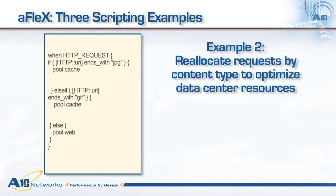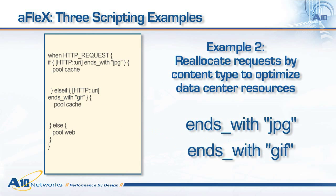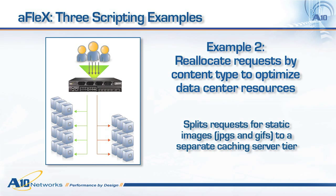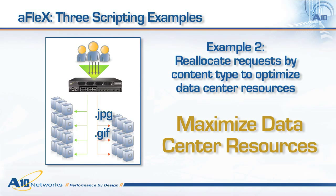In the second example, we're reallocating requests by content type to optimize data center resources. Transparent to the user, it splits requests for static images like JPEGs and GIFs to a separate caching server tier. This allows servers to be optimized for specific content types, maximizing data center resources.